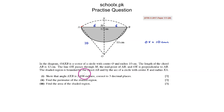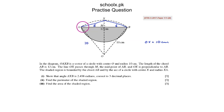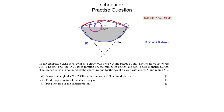The shaded region is bounded by the chord AB and by the arc of a circle with center X and radius XA. So this arc AB is the arc of a circle which has its center at X, with radii XA and XB.